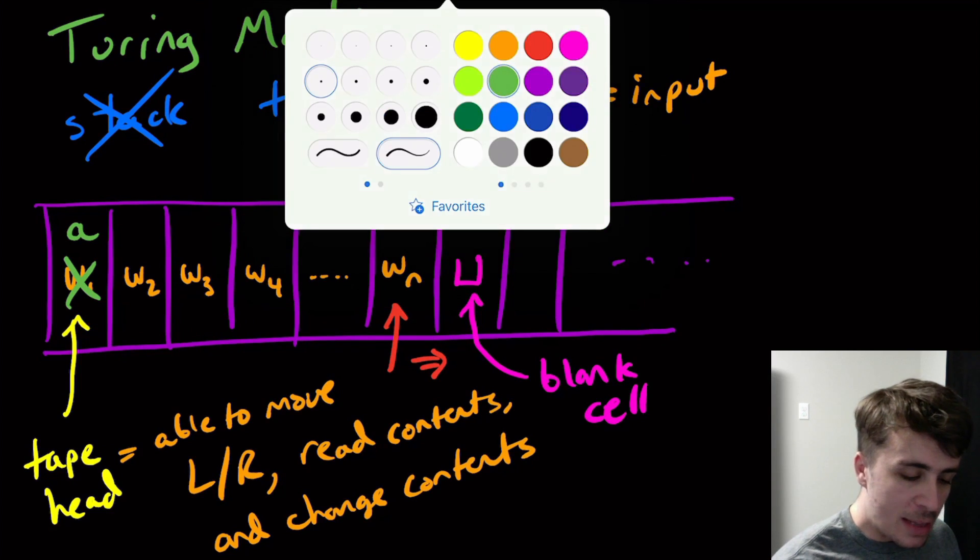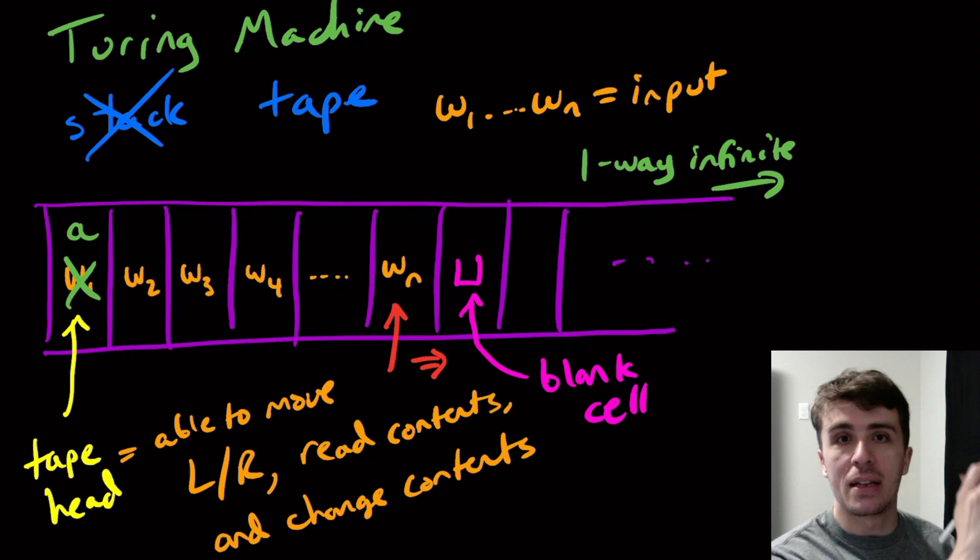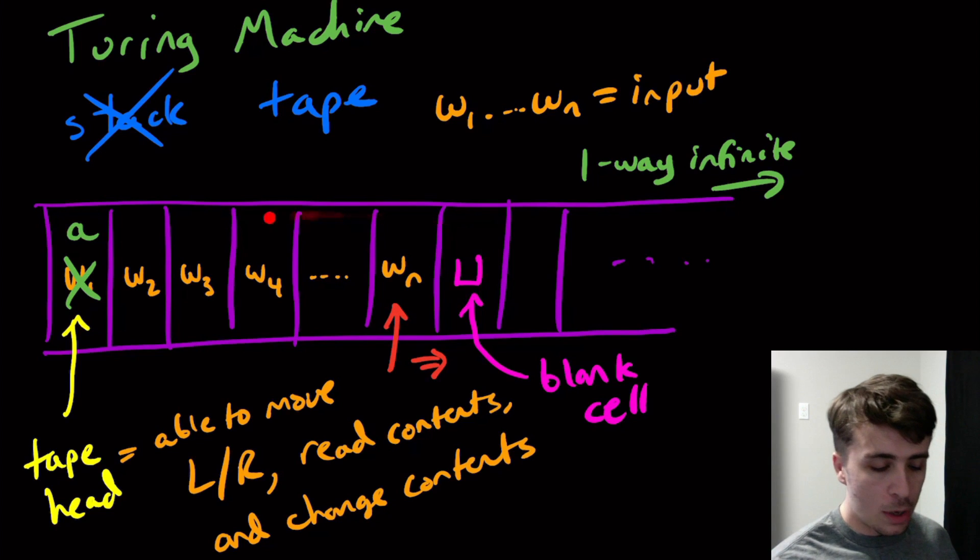The reason why that's important is that this tape is one-way infinite. It can go infinitely far that way. At every single point, we're only going to see a finite slice of the tape. But the key is that we can have this grow as much as we want. We can keep going right as much as we want and potentially never stop.